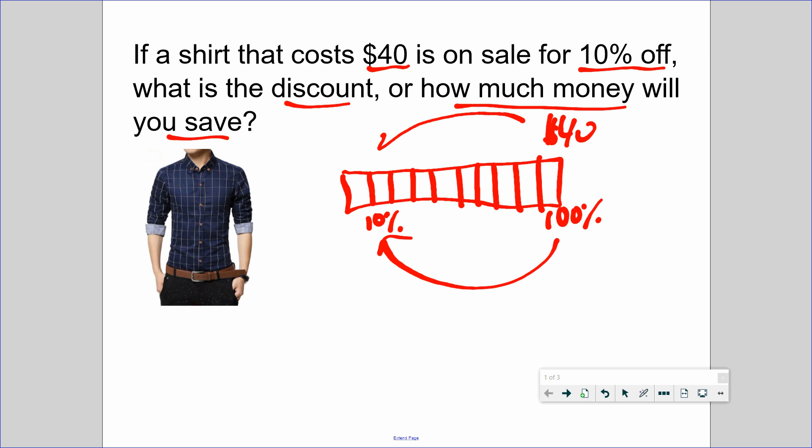Now you need to find the relationship between 100% to 10%. How many groups of 10% go into 100%? 10 of them. So we have to break it down by dividing by 10. $40 divided by 10 is $4, so that means every 10% is $4.